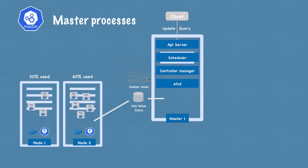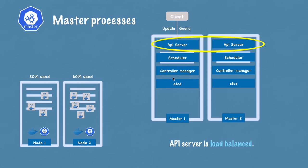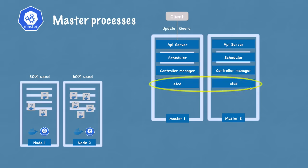Master processes are absolutely crucial for cluster operation, especially the etcd store, which must be reliably stored or replicated. In practice, this cluster is usually made up of multiple masters where each master node runs its master processes. The API server is load balanced and the etcd store forms a distributed storage across all the master nodes.